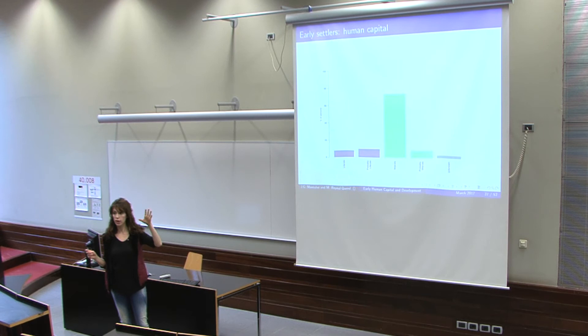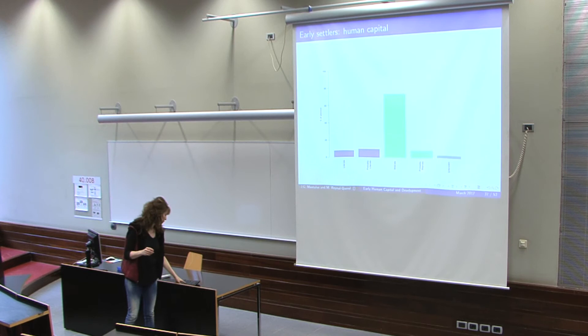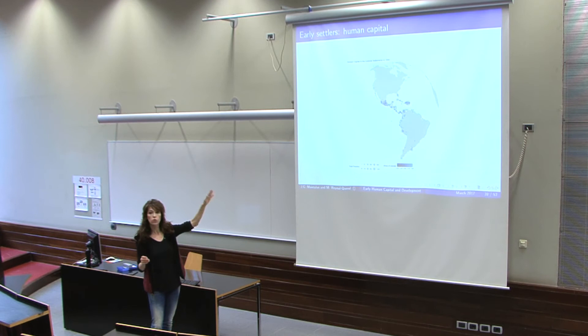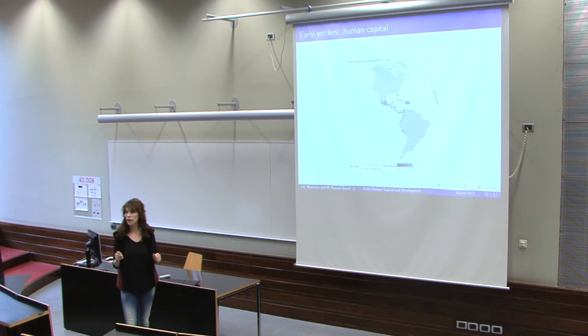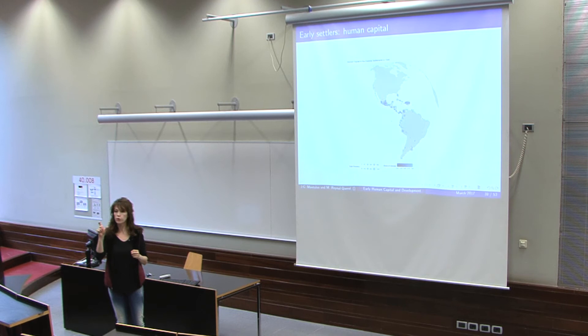This is how the distribution of literate and illiterate settlers looks, though here it still includes all travelers until 1540. As noted, we are going to use just the travelers during the first five years after the first traveler arrived at each destination point.